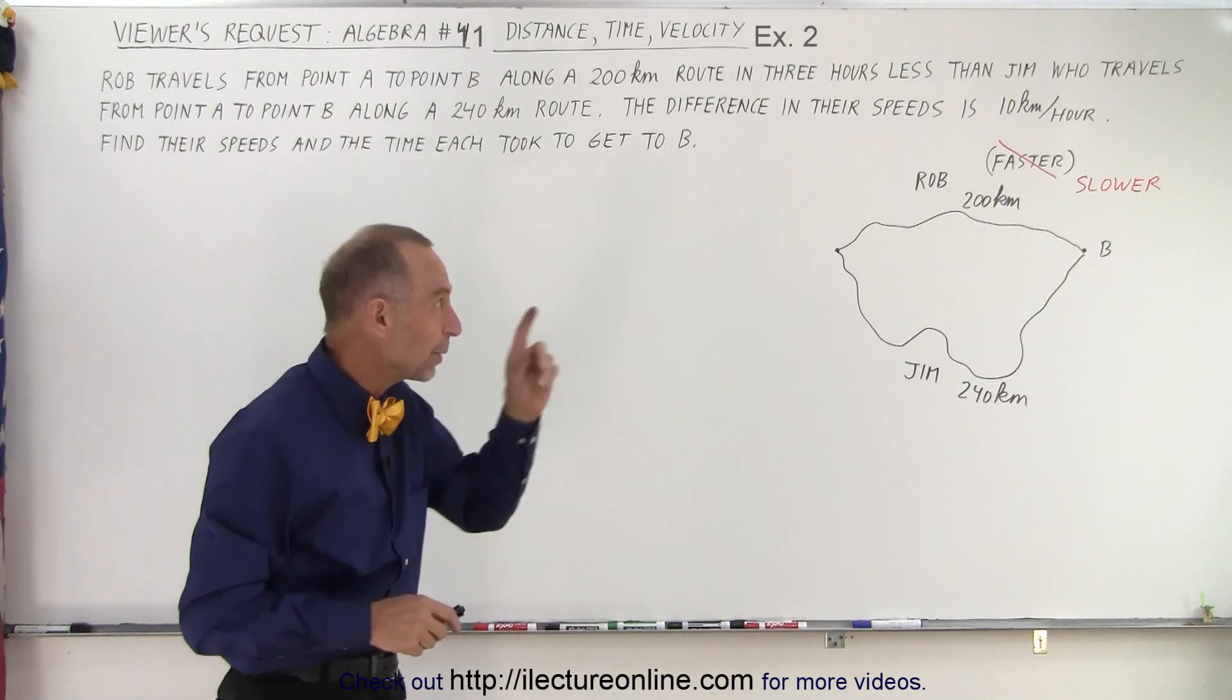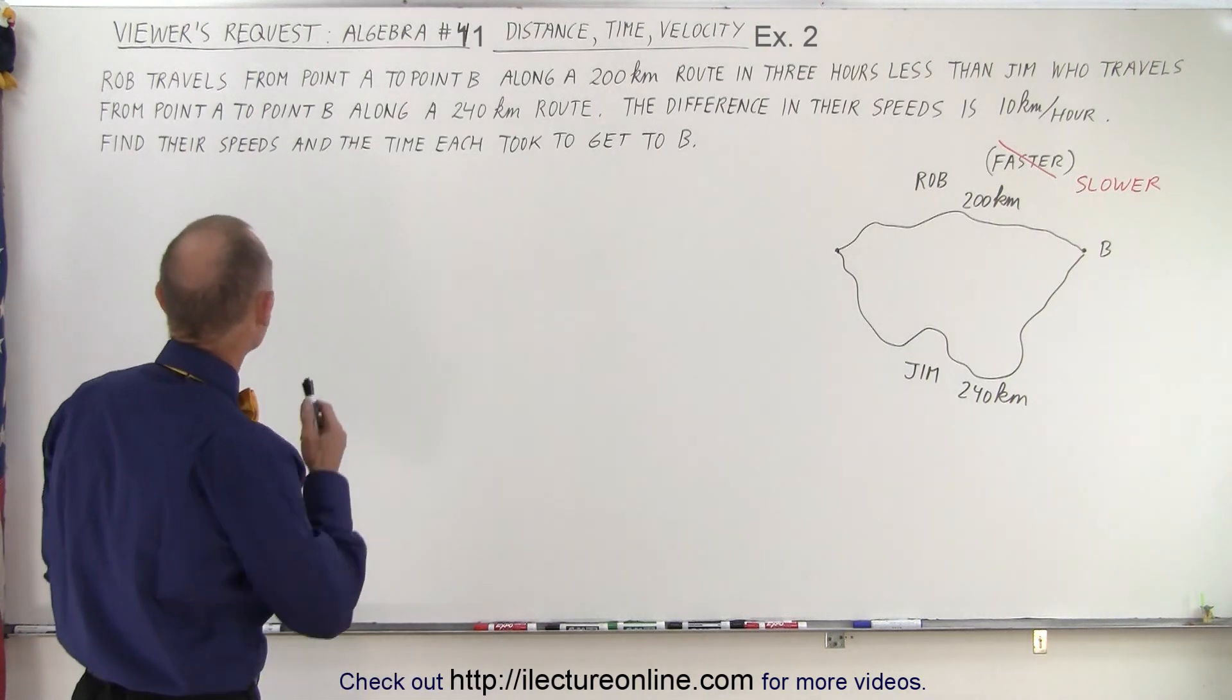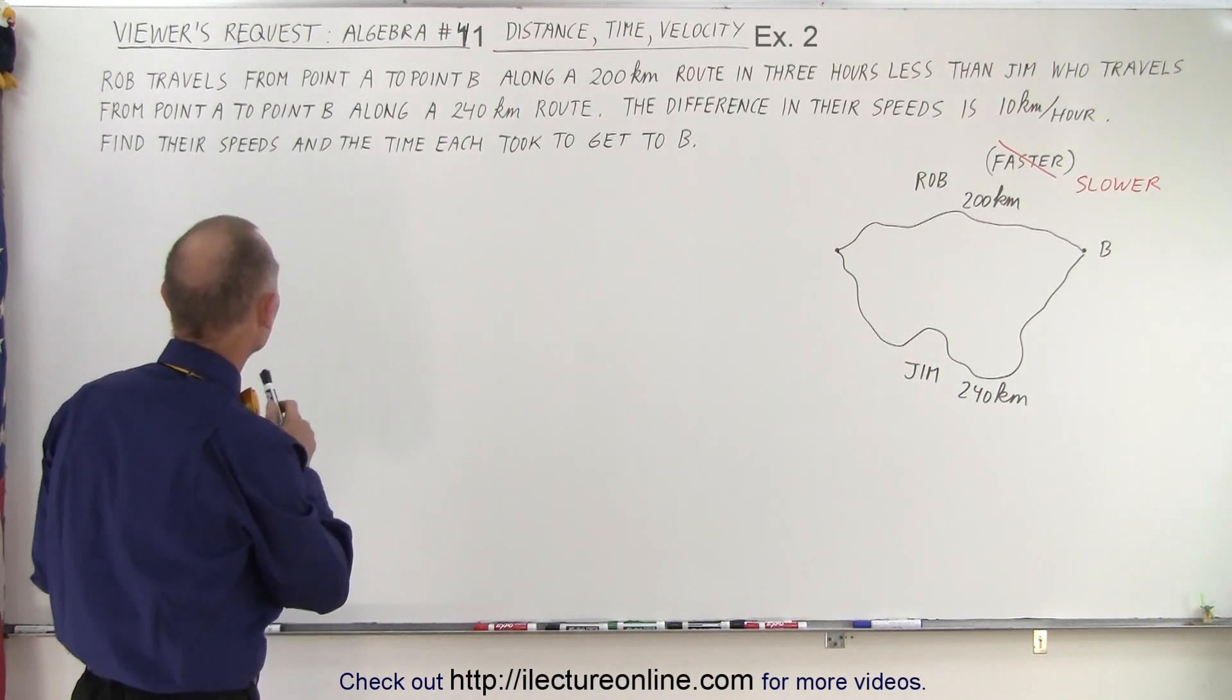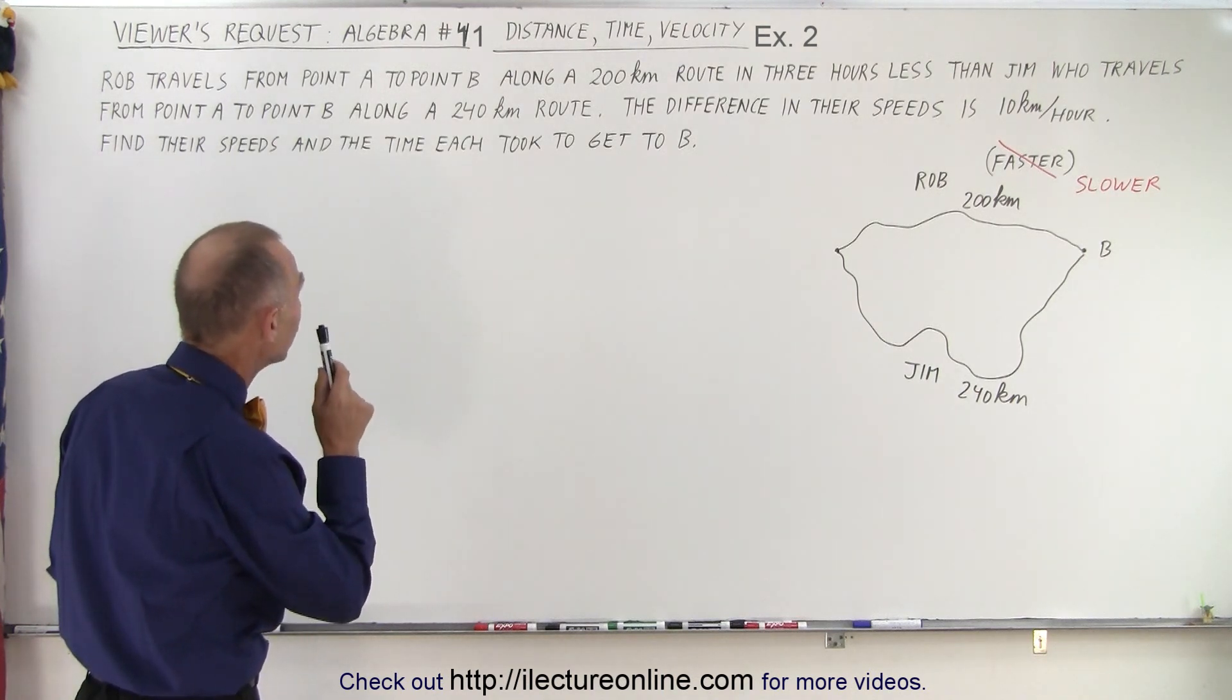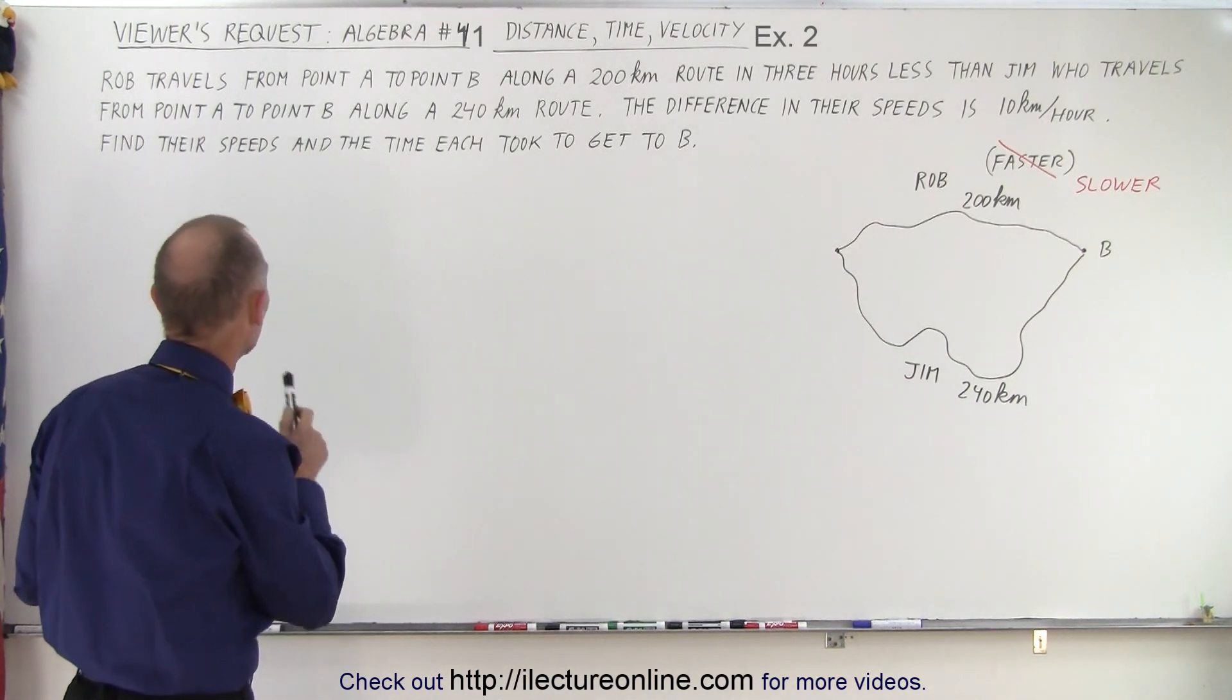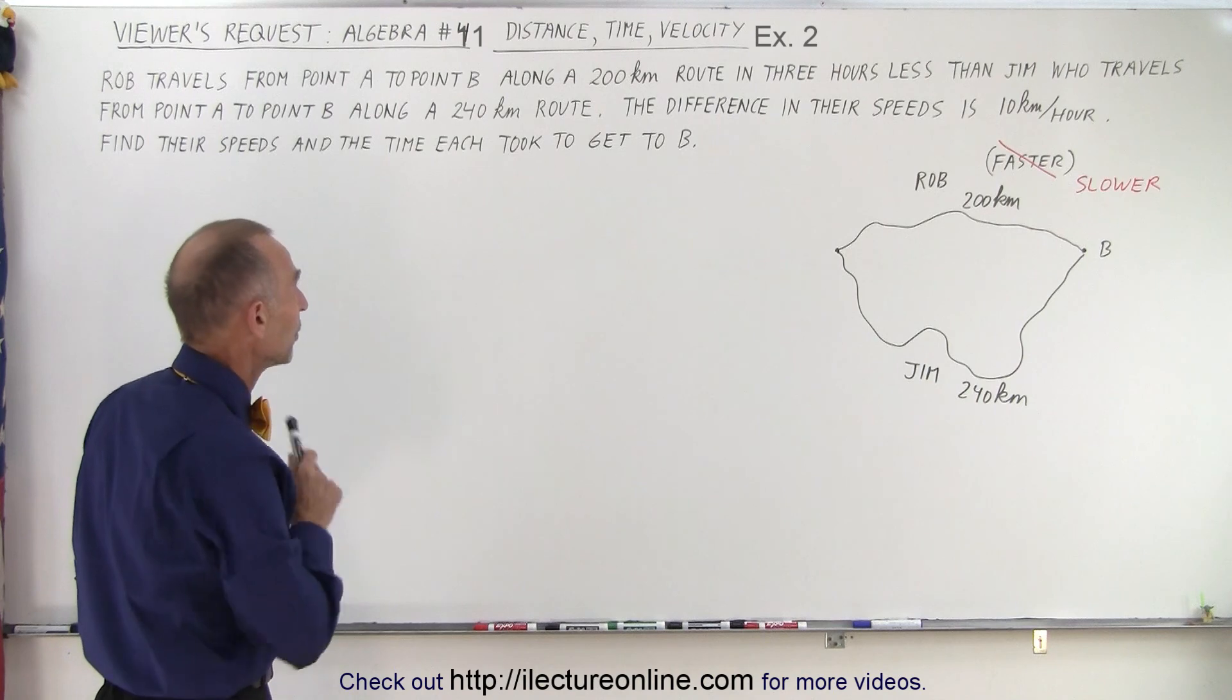Let's read the problem and see why we need to make an assumption like that. Again, the problem deals with distance, time, and velocity, and it says that Rob travels from point A to point B along a 200 kilometer route in three hours less than Jim, who travels from point A to point B along a 240 kilometer route.